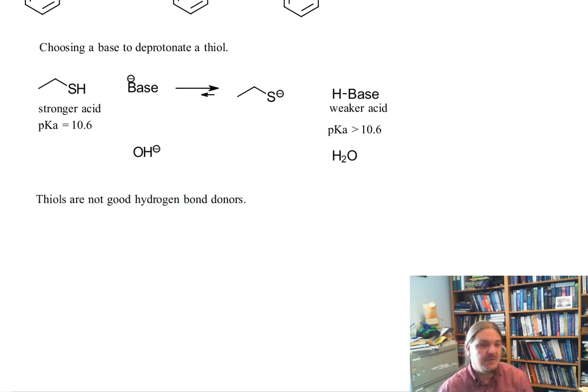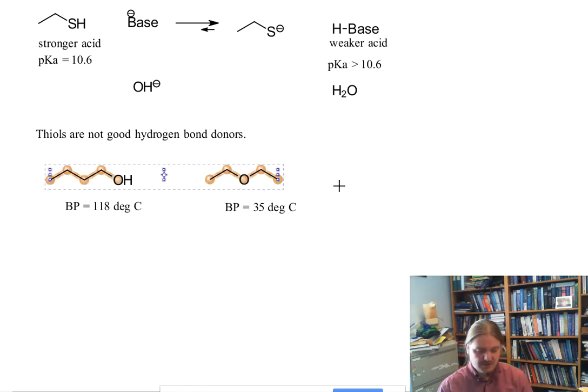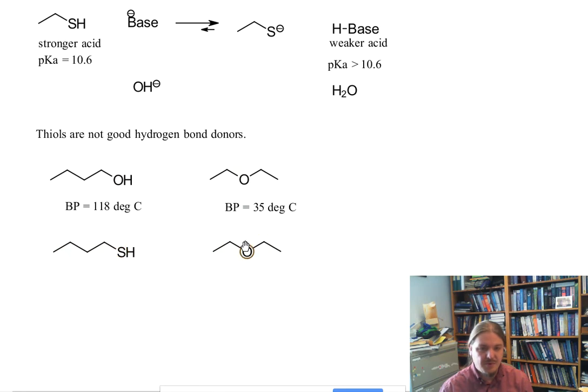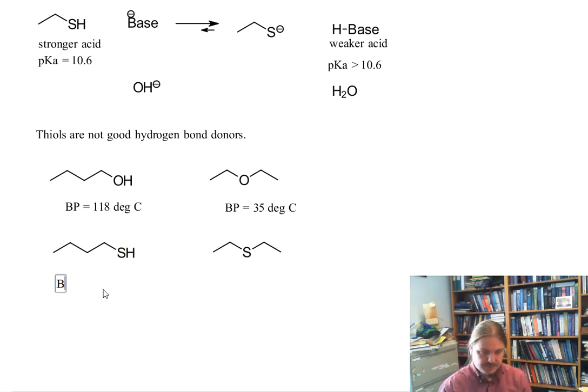The best evidence I can give you for that are the difference in boiling point between one-butanol and diethyl ether. One-butanol boils at 118 degrees Celsius, and diethyl ether boils at 35 degrees Celsius. But when we switch to the sulfur analogs, something interesting happens between butanethiol and diethyl sulfide. Butanethiol, despite having a higher mass, has a lower boiling point than one-butanol.